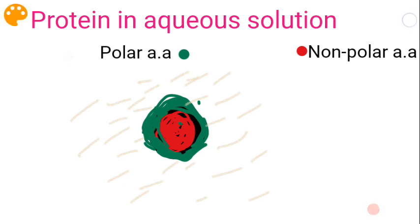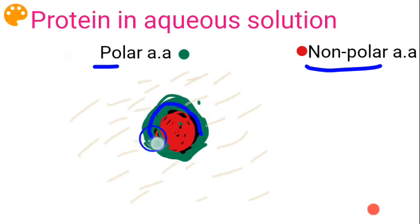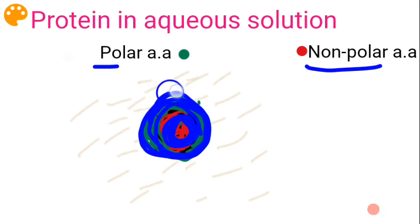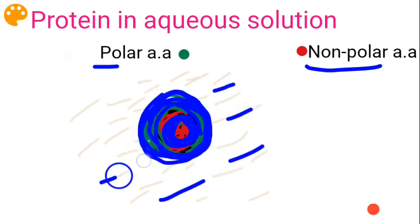When you dissolve your protein in aqueous solution — proteins are made up of amino acids, we have polar as well as non-polar amino acids — the protein molecules will pack themselves such that polar amino acids constitute the external portion of the protein, while non-polar amino acids pack themselves into the interior portion.